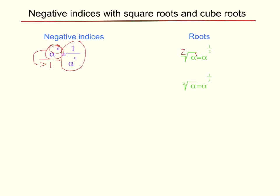Going back to the answer, the numerator of the power is the power of the pronumeral that's inside the root, and the denominator of the power is the power of the root itself. The same thing goes for cube roots. The pronumeral inside the cube root has an invisible power of 1 and the root itself has a power of 3, which is already stated there.